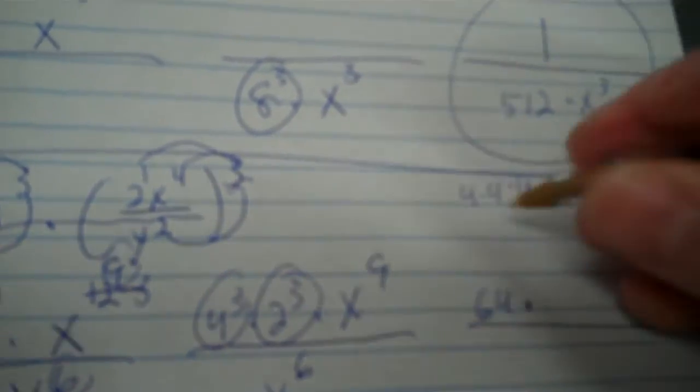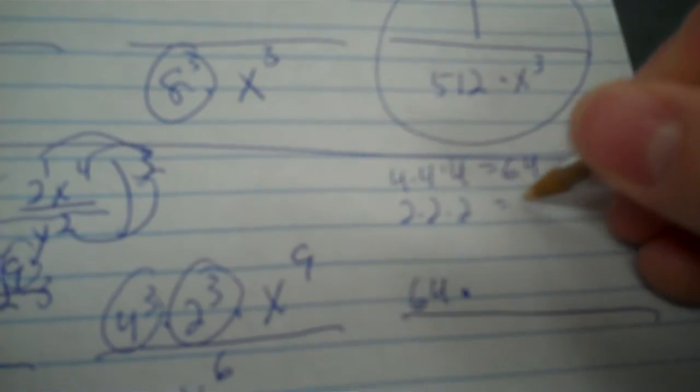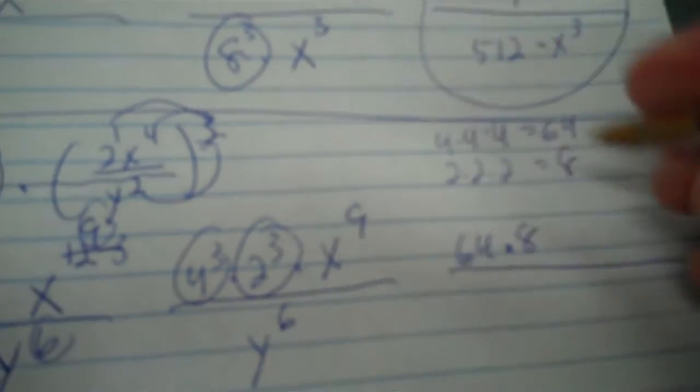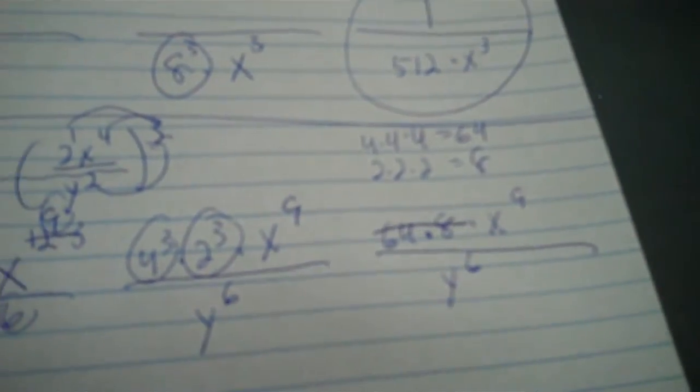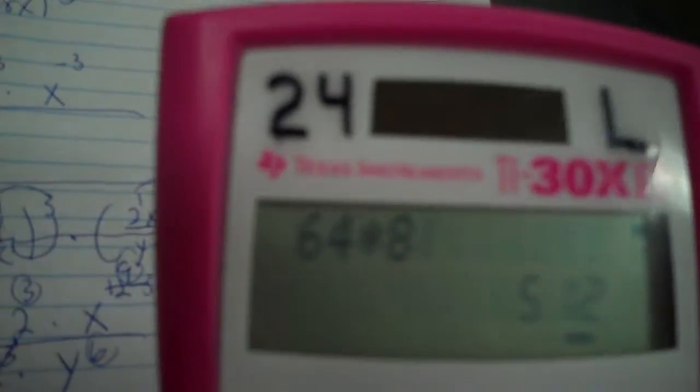Okay, and I can simplify these two. 4 to the third would be 4 times 4 times 4. That's 64. Put it where the 4 to the third was. 2 to the third, 2 times 2 times 2 is 8. Times x to the ninth, y to the sixth. Then you cross those out. 5 to 12. You need to multiply those. 512 times x to the ninth over y to the sixth.